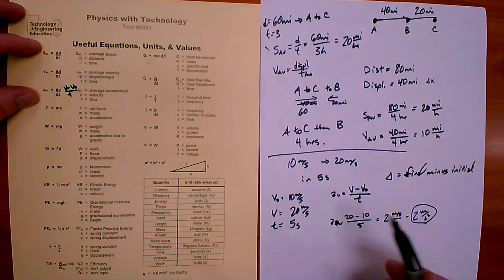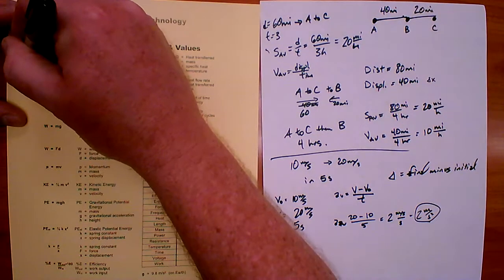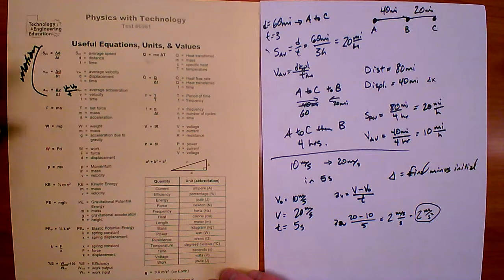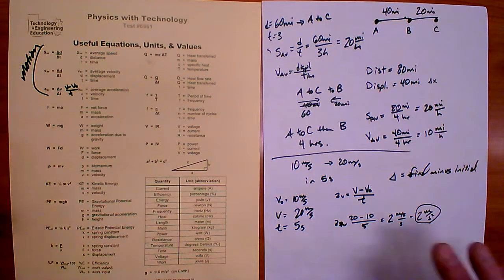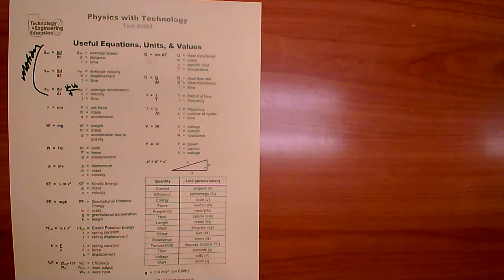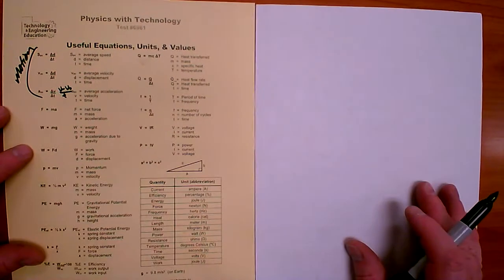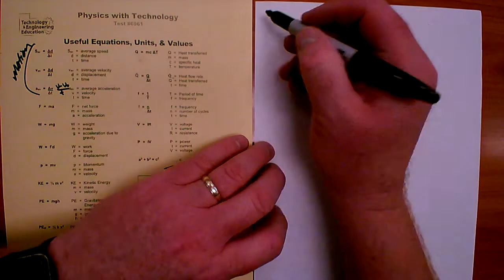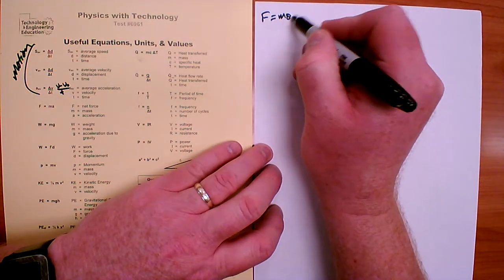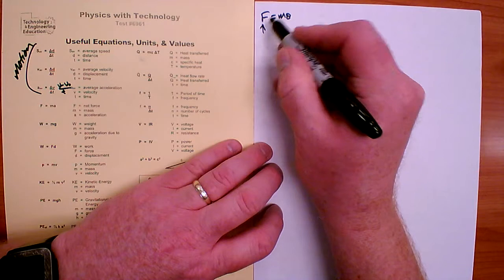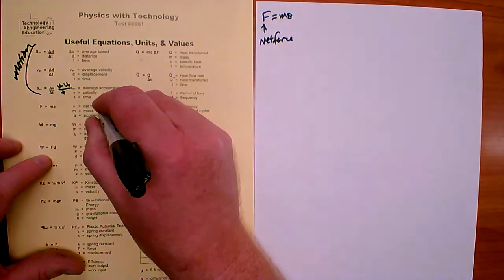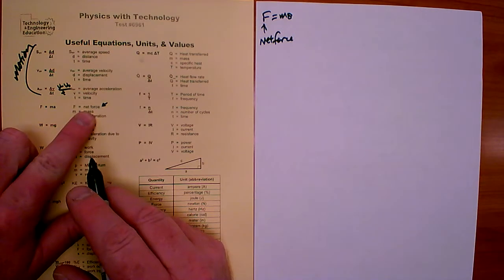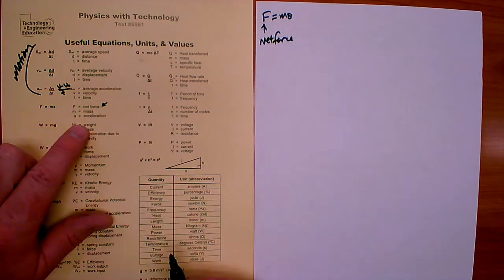That covers the first three motion equations: average speed, average velocity, and average acceleration. The next several equations have to do with forces. The first is F equals MA. As we learned in class, the F here is really the net force — net force equals mass times acceleration.